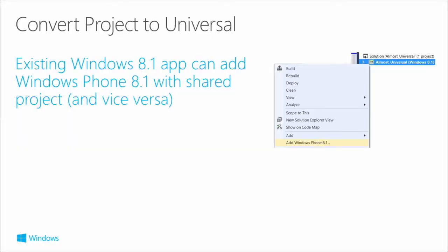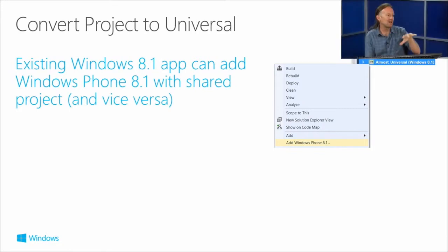If we have an existing project and want to convert it to universal, this applies only to Windows 8.1 and Windows Phone 8.1 projects. If you started with a Windows 8.1 project and want to add phone, or started with phone and want to add Windows — and when we say Windows Phone 8.1 here, we mean WinRT XAML apps, not Silverlight.